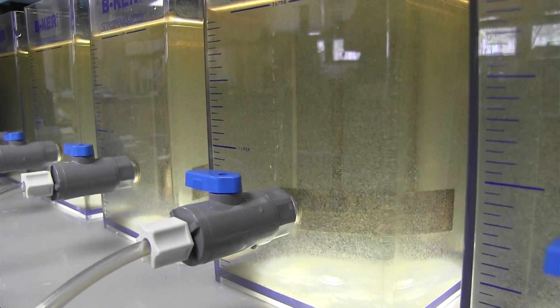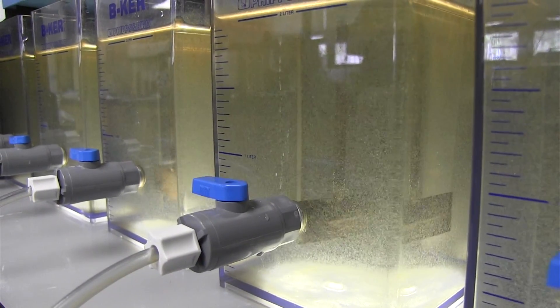A standard jar test could take anywhere from an hour to even two hours if you're having some issues finding the precise chemical balance that you're looking for to achieve your optimum flock.